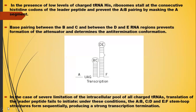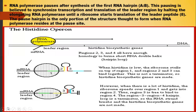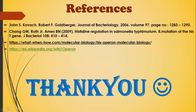In the case of severe limitation of the intracellular pool of all charged tRNAs, translation of the leader peptide fails to initiate, and under this condition the AB, CD, and EF stem-loop structures form sequentially, producing strong transcription termination. RNA polymerase pauses after synthesis of the first RNA hairpin (AB), and this pausing is believed to synchronize transcription and translation of the leader region by halting the elongating RNA polymerase until a ribosome starts translation of the leader peptide. The pause hairpin is the only portion of the structure thought to form when RNA polymerase resides at the pause site, as depicted in the figure below.